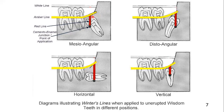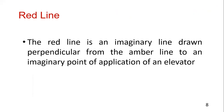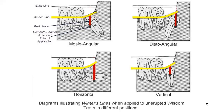The amber line indicates the amount of bone that will need to be removed for the tooth to come out. Now the red line — this is an imaginary line drawn perpendicular from the amber line to an imaginary point of application of an elevator. It is easier to understand with the help of a diagram.